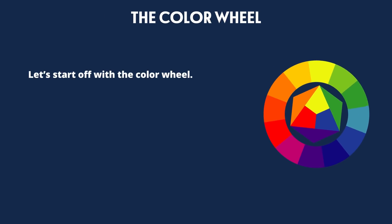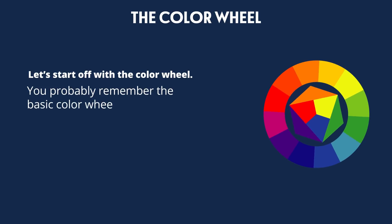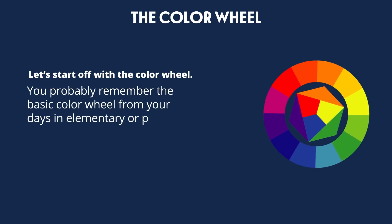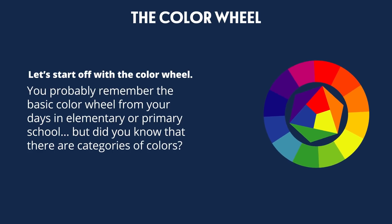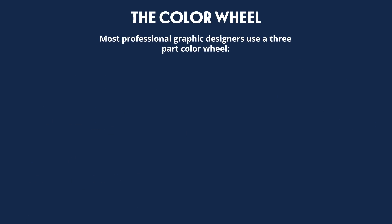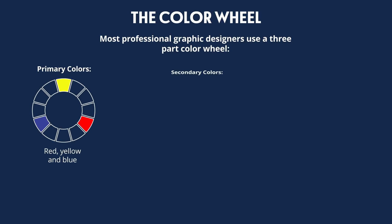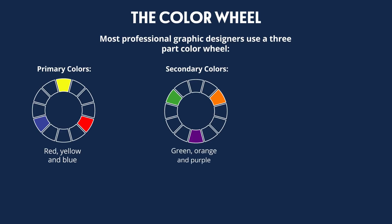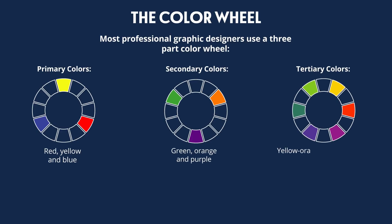Let's start off with the color wheel. You probably remember the basic color wheel from your days in elementary or primary school, but did you know that there are categories of colors? Most professional graphic designers use a three-part color wheel. Primary colors: red, yellow, and blue. Secondary colors: green, orange, and purple. And tertiary colors: yellow-orange, red-orange, red-purple, blue-purple, blue-green, and yellow-green.